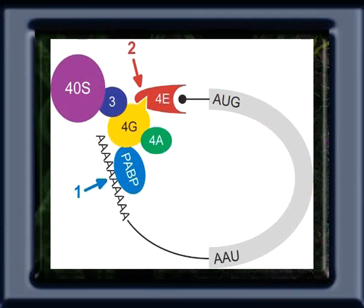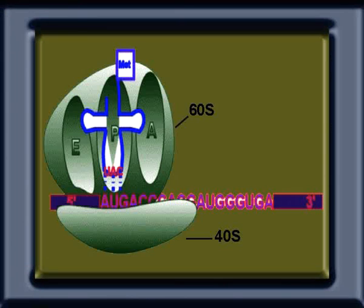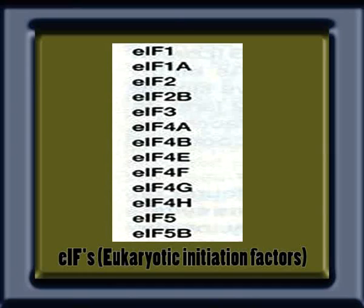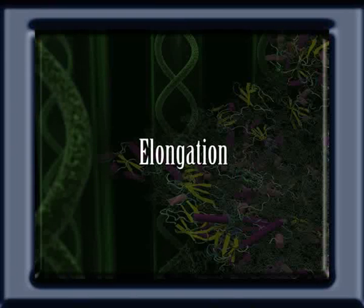Initiation in eukaryotes proceeds in a similar way as in prokaryotes — binding of the small 40S subunit with mRNA, followed by joining of charged tRNA, and then the larger 60S subunit to form the initiation complex. However, initiation in eukaryotes requires at least 10 initiation factors, designated as eIFs (eukaryotic initiation factors), which makes initiation more complex.